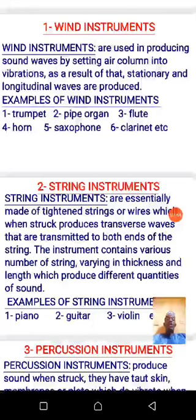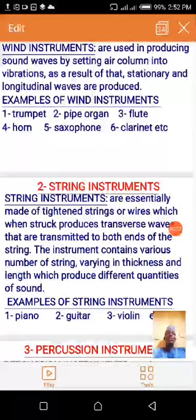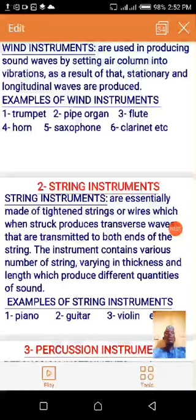Stationary waves are waves formed when two progressive waves of equal amplitude and equal wavelength traveling in opposite directions are combined. In the case of longitudinal waves, those are the types of waves that travel parallel to — or in the same direction as — the source that produces or generates the waves.